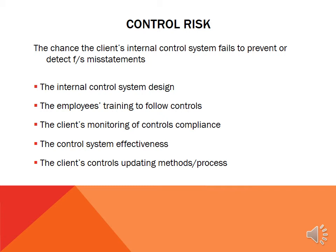So let's move on to control risk. Control risk is the chance the client's internal control system fails to prevent or detect financial statement misstatements. Inherent risk varies from high to low. If there's low inherent risk, the client doesn't have very complicated transactions and has good accountants, so it probably doesn't generate many financial statement errors. Control risk is then the company's response — whether it puts a good, strong system in place. That depends on how much training they do on controls, whether they monitor control compliance, and whether the system is effectively designed, updated regularly, and has processes necessary to detect financial statement misstatements.